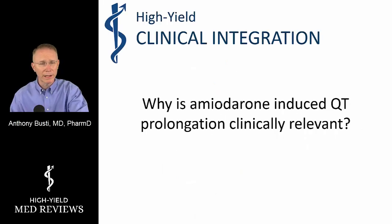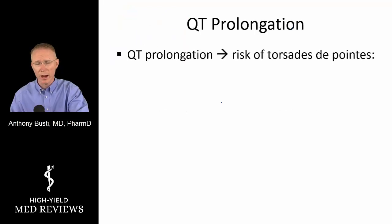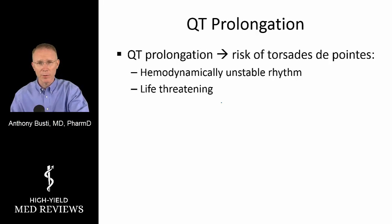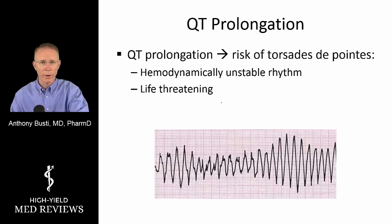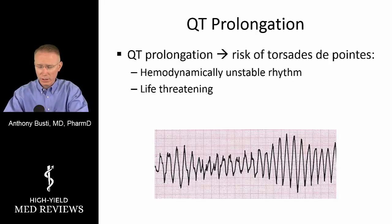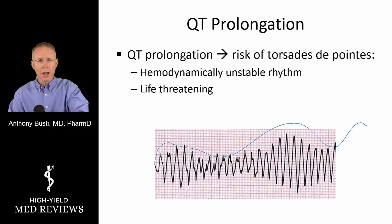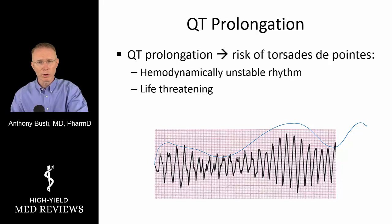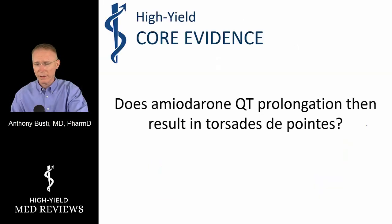Why do we care? The clinical significance of QT prolongation is that at some point you can create a malignant ventricular dysrhythmia called torsades de pointes — a hemodynamically unstable, life-threatening dysrhythmia involving twisting of the points, where you have these QRS complex ventricular contractions going up and down. This needs to be dealt with emergently, as it is obviously life-threatening.